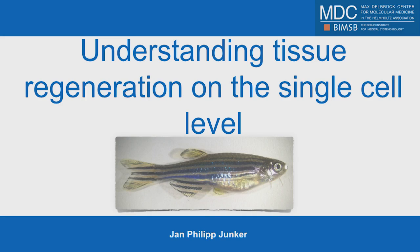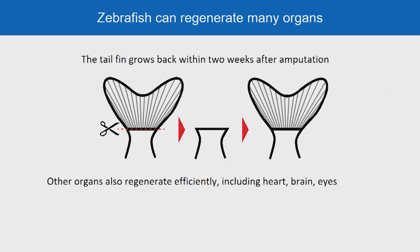Zebrafish have the remarkable capacity that they can regenerate many parts of their bodies. For instance, if we amputate the tail fin, it grows back within two weeks. Similarly, the fish can also efficiently regenerate many other organs like the heart, the brain, or the eyes after injury. So understanding how regeneration works in the fish may help us improve regeneration in humans.